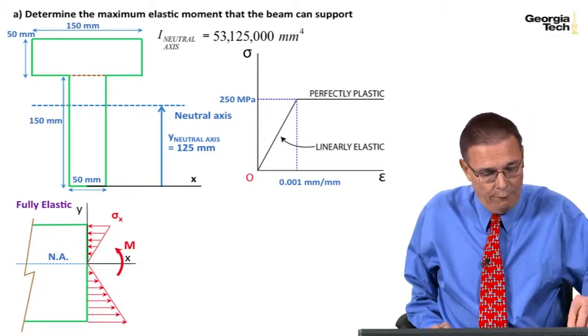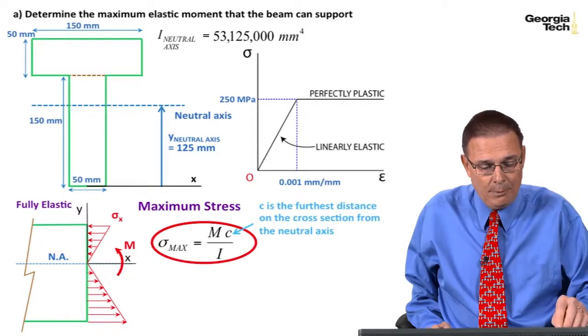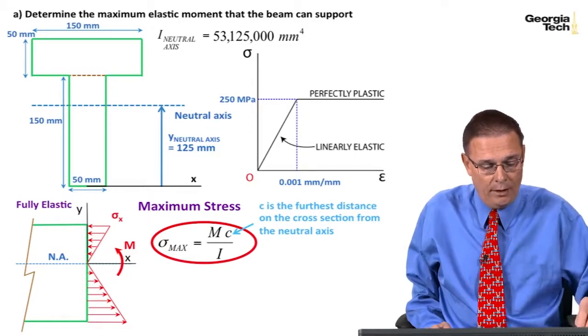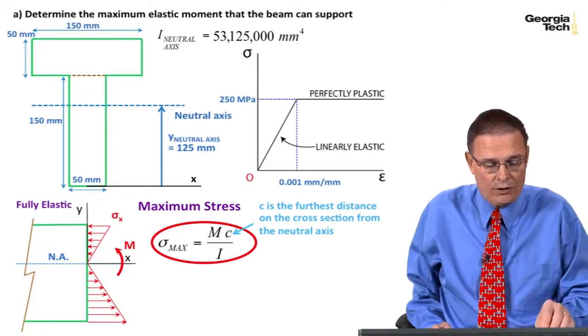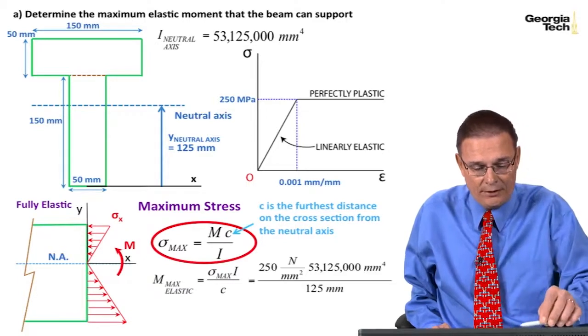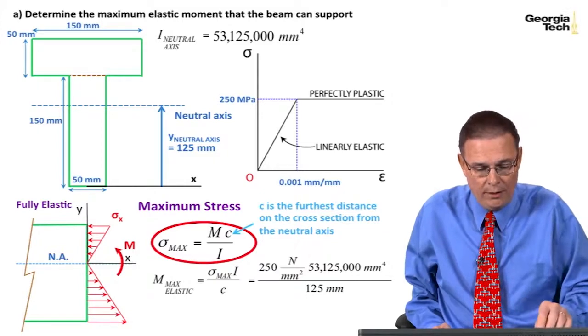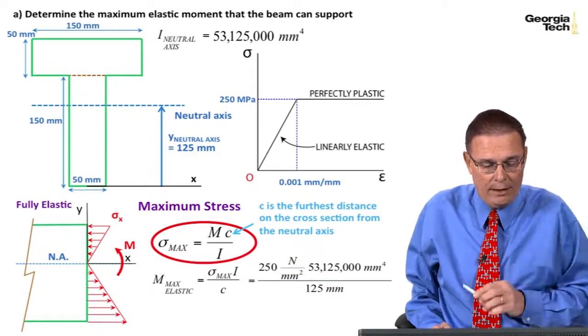And so, we're in the fully elastic condition. We know that the maximum stress is going to be experienced at the furthest fiber. In this case, it's going to be down to the bottom. And so, I can solve for M max, and M max is the sigma max that we get, which is 250 for the elastic region, times I divided by C, which is again, 125 down to the bottom section.